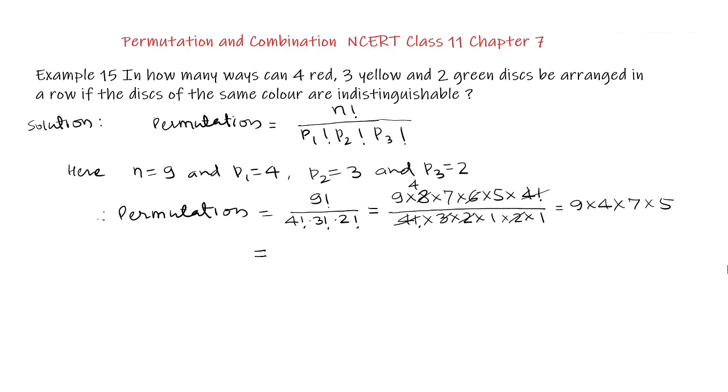So 9 times 7 is 63 and 5 times 4 is 20 and 63 × 20 is if we put 0 of 20 and 63 × 2 is 126.